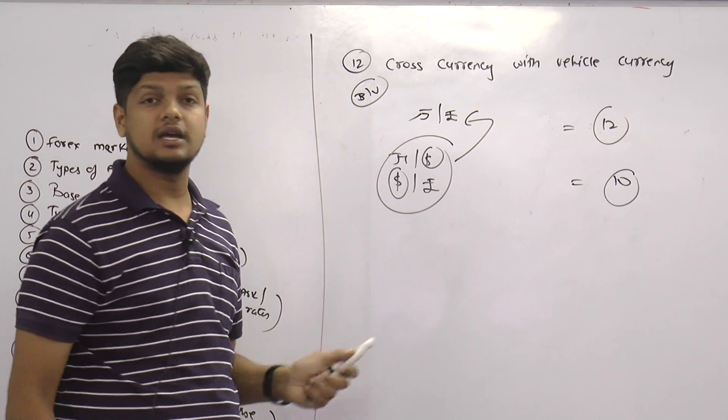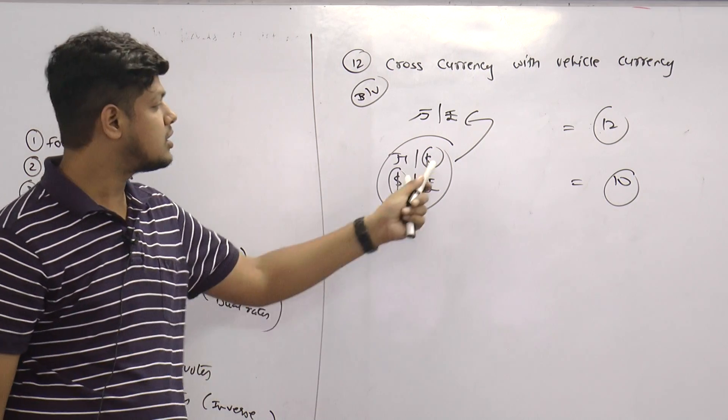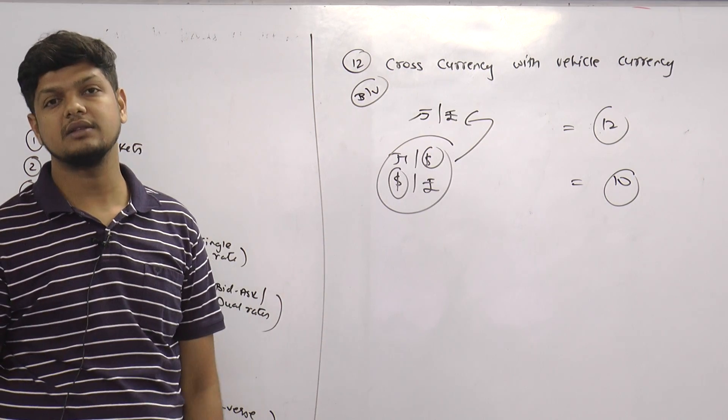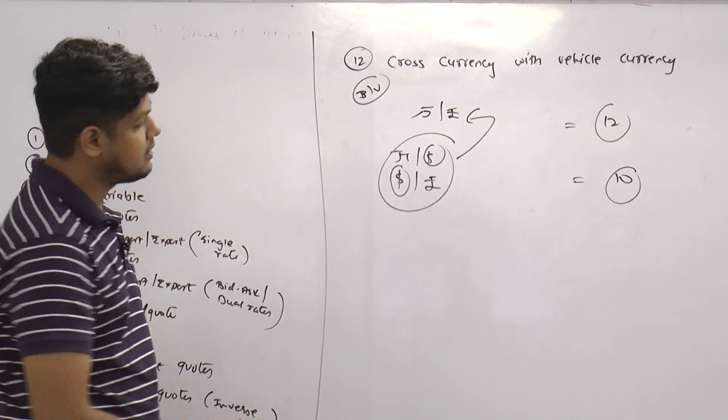Vehicle currency is a common currency, the common connection, the common route through which you take another flight. That is what is the concept of vehicle currency and cross currency.